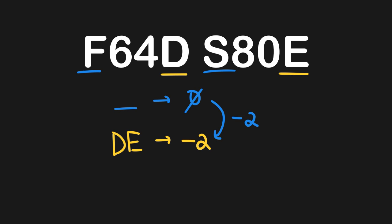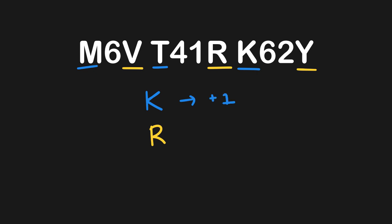Let's look at one last example. For the old sequence, we skip M and T, then include K — that's plus one. For the new sequence, we skip V, include R, and skip Y — that's plus one. There is no difference between these two values, so the net change in this particular sequence is zero.